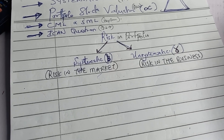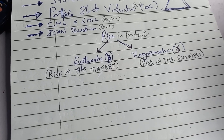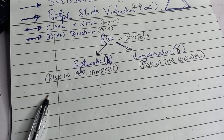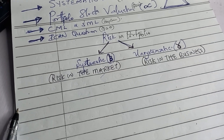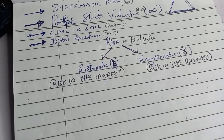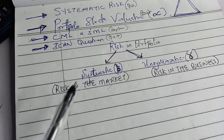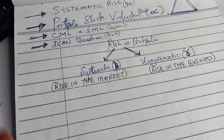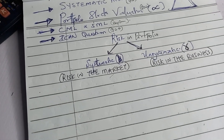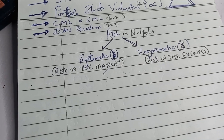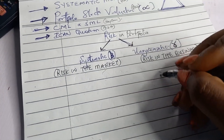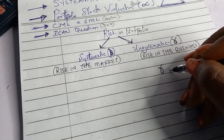In our last class we concluded on systematic risk. In this class we're going to continue with systematic risk. The systematic risk is the risk in the market — the risk that cannot be diversified. To calculate your systematic risk you have two approaches: the covariance approach and the coefficient of correlation approach.